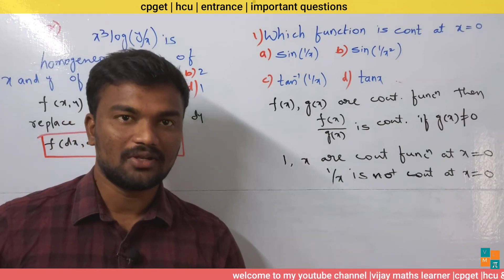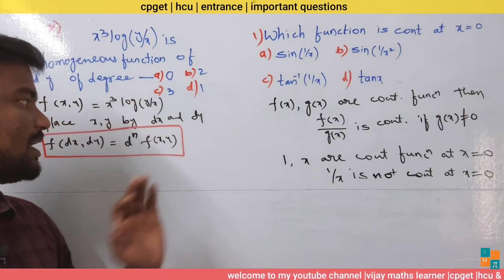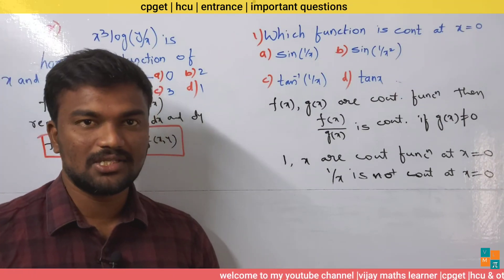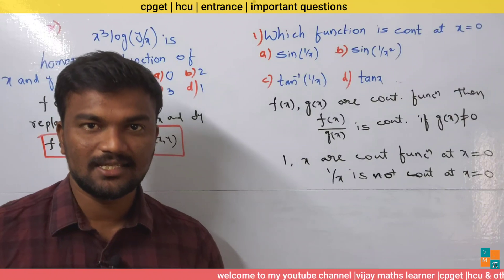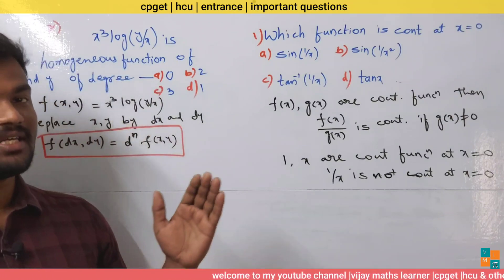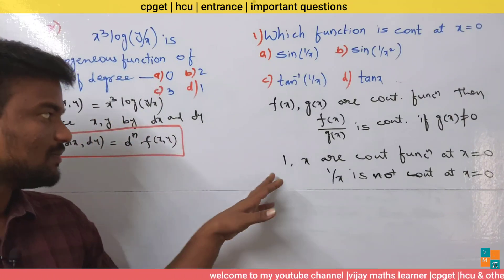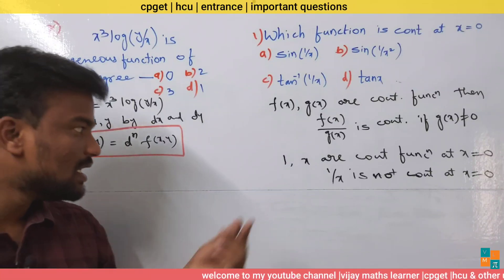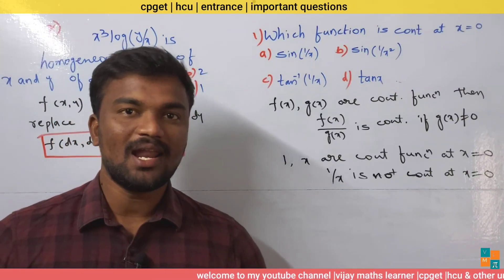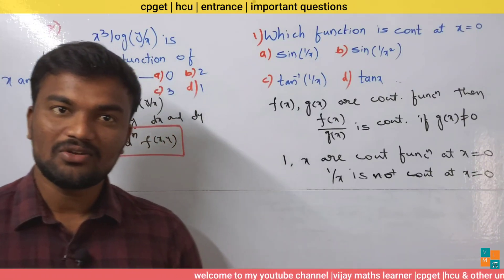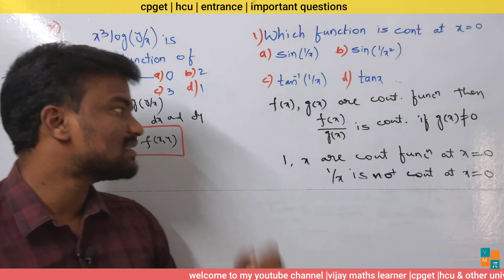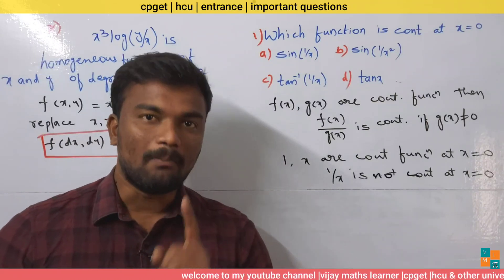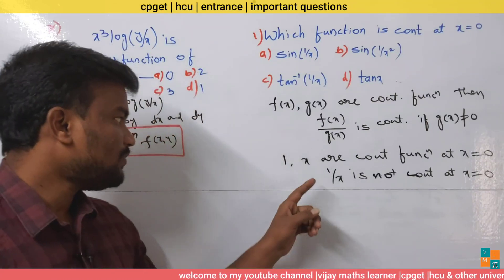At x equals 0, the functions 1 and x are continuous. Since every constant function is continuous, 1 is continuous. And since every polynomial is continuous, x is continuous. So both 1 and x are continuous at x equals 0.